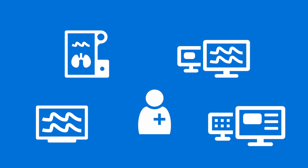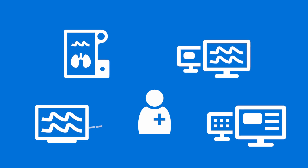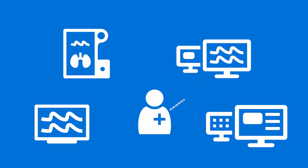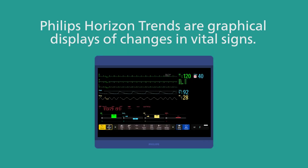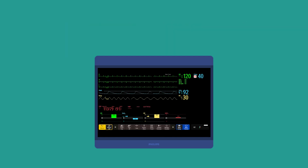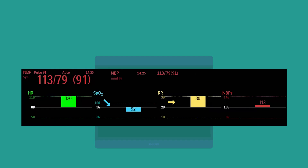From monitors and documentation systems to therapeutic devices, Philips Horizon Trends are graphical displays of changes in vital signs. The instantly recognizable illustrations help you identify deviations as they occur and make informed decisions.